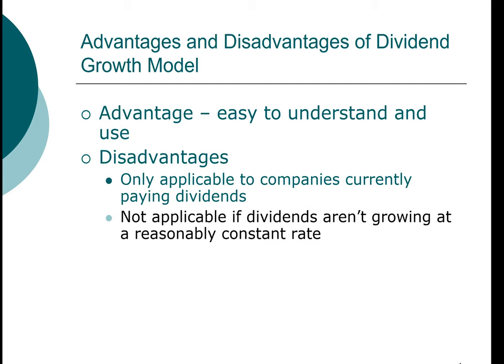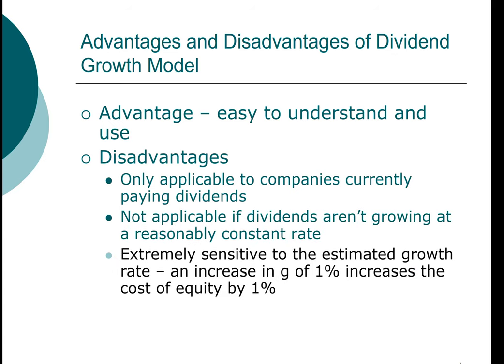There is a distinction between theory and practice. In theory, the growth rate should be absolutely constant. But if a company has an average dividend growth rate of around 3% — say 2.8% one year and 3.1% another — that's reasonably constant and we would probably be okay applying this model. However, if a company's dividend grows at 10% one year and 0% the next, it may average to 5% but it's definitely not constant. Another important caveat is that this model is extremely sensitive to the assumed growth rate, because every 1% change in the growth rate will increase or decrease the cost of equity estimate by 1%.